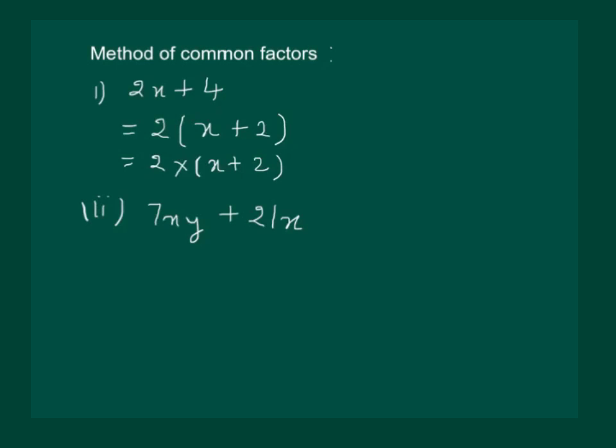Let us take up another example 7xy plus 21x. If we compare the two terms, we will see that 7 can be taken out as common and x is also common. So we will take out 7 and x as common. Then what will remain inside the bracket is y plus 3.